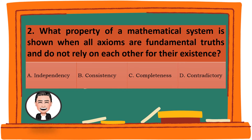Question 2. What property of a mathematical system is shown when all axioms are fundamental truths and do not rely on each other for their existence? A. Independency. B. Consistency. C. Completeness. D. Contradictory. The correct answer is C. Completeness.